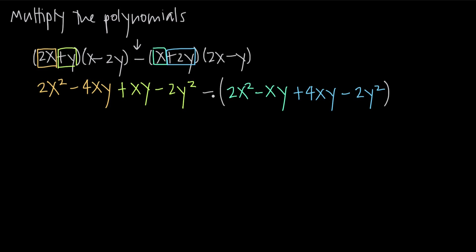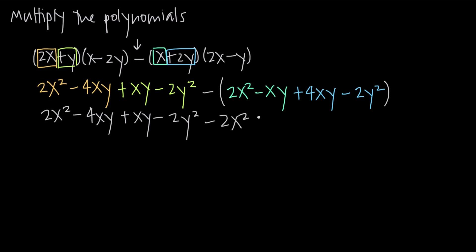Notice how the subtraction sign in the middle applies to every term in the second polynomial. Now it's just a matter of simplifying — we distribute the negative sign and collect like terms. We have 2x squared minus 4xy plus xy minus 2y squared. Then we distribute the negative, which is essentially multiplying by negative 1: negative 1 times 2x squared is negative 2x squared; negative 1 times negative xy gives positive xy; positive 4xy becomes negative 4xy; and negative 2y squared becomes positive 2y squared.